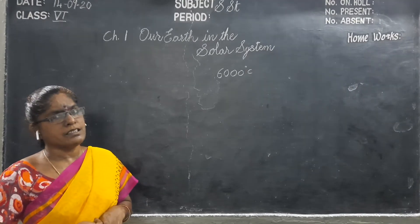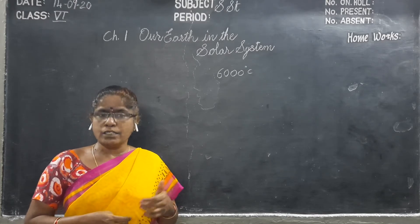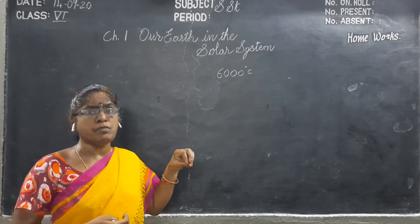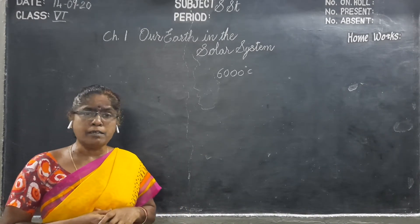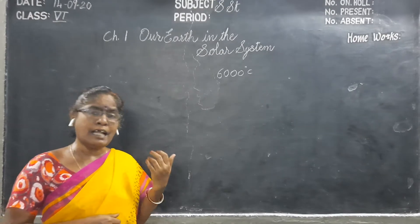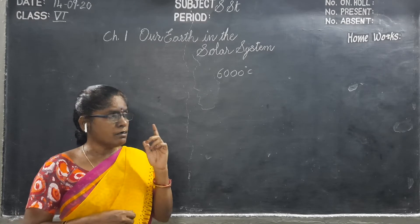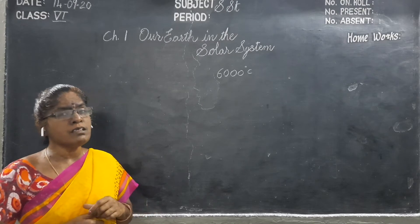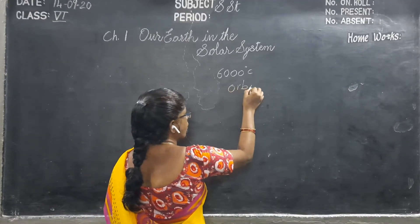Now we will learn about planets. What are the planets? The celestial bodies which move around the sun, around the star, are called planets. In our solar system we have 8 planets. Up to 2006 we learned 9 planets, but now only 8 are considered planets, because Pluto does not orbit properly on its path around the sun. The planets move around the sun in a particular path, and that path we call an orbit.